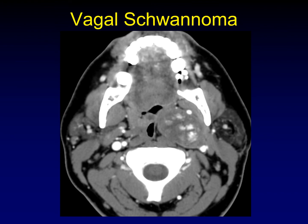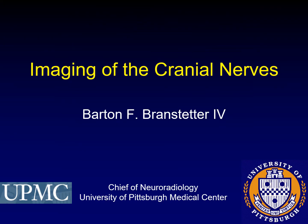Here's a very similar-looking lesion, once again splaying the internal carotid artery away from the internal jugular vein. However, this shows heterogeneous patchy enhancement with areas of non-enhancement and areas of extensive enhancement in a geographic distribution — characteristic of a schwannoma. The location identifies this as a vagal tumor, and the enhancement characteristics help distinguish schwannoma from paraganglioma. This ends part five of the lecture on imaging of the cranial nerves — one more to go.